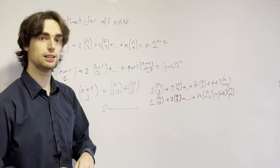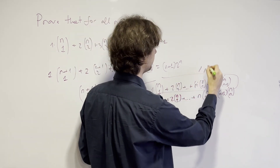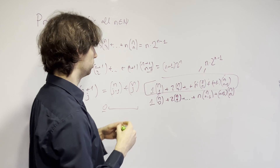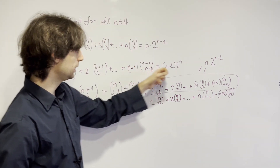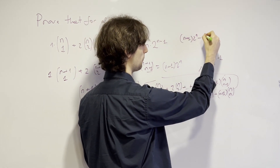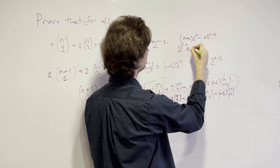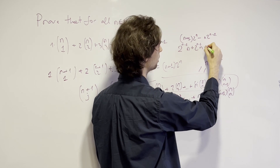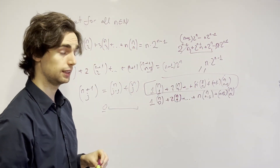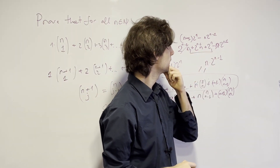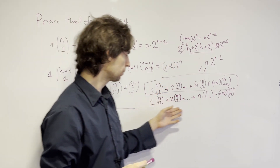Here I invite you to pause for another 2 to 3 minutes and try to push the problem further. We know this first part — 1 times n choose 1 plus 2 times n choose 2 up to n times n choose n — is equal by induction to n times 2 to the n minus 1. Now, what do we need the rest to equal? We need n+1 times 2 to the n minus n times 2 to the n minus 1, which equals 2 to the n minus 1 times n, plus 2 to the n minus 1, plus 2 to the n. So we need this second sum to provide an extra 2 to the n.